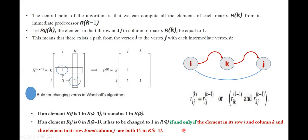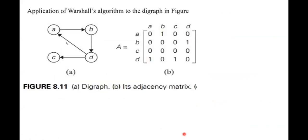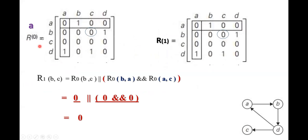This provides sufficient understanding of Warshall's algorithm. Using this basic step, we take up an example. For this particular directed graph, we consider the adjacency matrix as R^0. In the first step, we check for paths with intermediate vertex a.